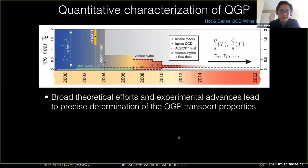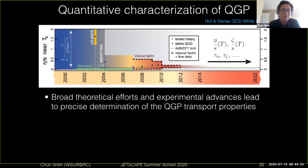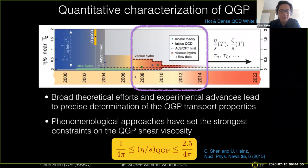This slide summarizes the yearly progress in our field in constraining shear viscosity as a function of time. Around the year 2000, there were only perturbative QCD calculations of shear viscosity, valid only at very high temperatures — much higher than those probed in heavy-ion collisions. Starting from 2007, the first viscous hydrodynamics implementations appeared, and model-to-data comparisons significantly shrank the error bars on shear viscosity from 2007 to about 2012. The phenomenological approach has set very strong constraints on the transport properties of the quark-gluon plasma.